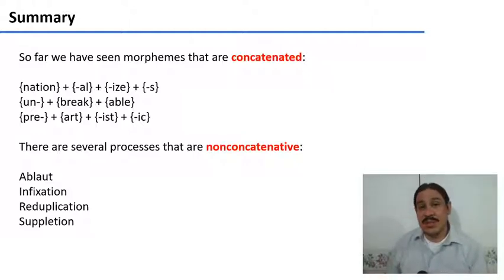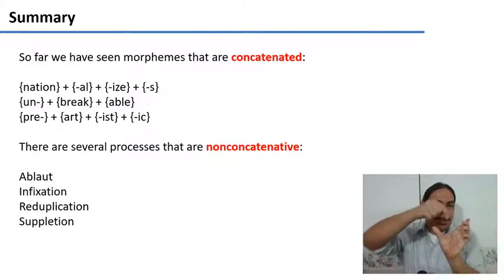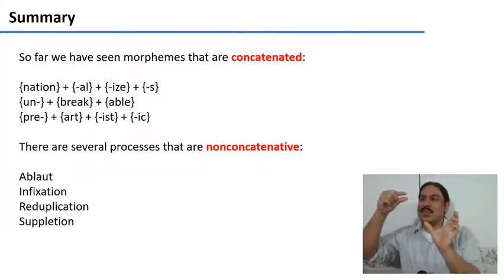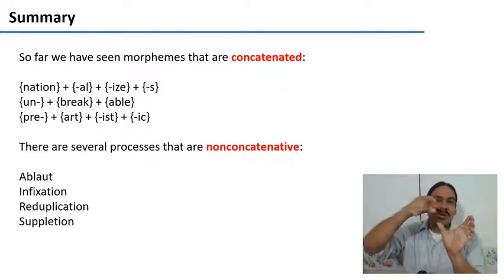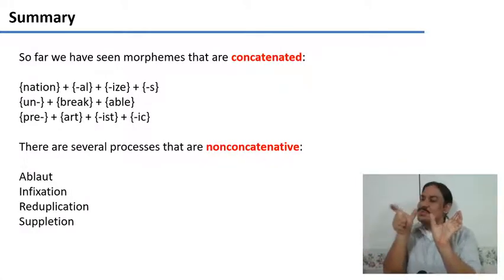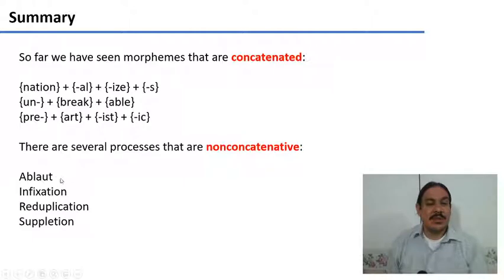However, there are many morphological processes that are non-concatenative, where there is some change in the root, or there's one morpheme that breaks a root in two, or maybe there's a root that is reduplicated and occurs twice. We are going to study these processes in this video: ablauts, infixation, reduplication, and suppletion.